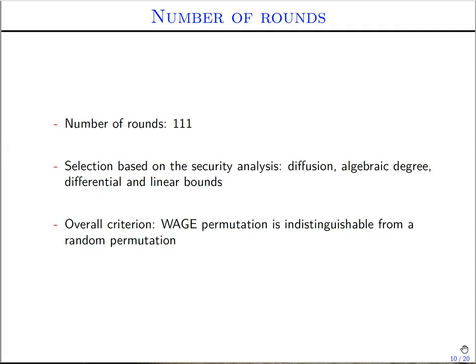For the number of rounds of the WAGE permutation, we iterate the WAGE round function for 111 rounds to get one call of the WAGE permutation. This selection is based on our security analysis, mainly focusing on diffusion, algebraic degree, and differential and linear bounds. The overall criterion for our analysis is to show that the WAGE permutation is indistinguishable from a random permutation with non-negligible probability.